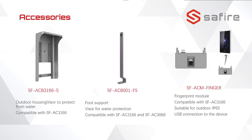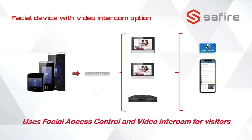We have some accessories — the housing, a power supply to connect the device, and an additional fingerprint reader for the AC3166. Some of the outdoor units can be used together with SAFIR monitors and even a recorder. Via the monitor you can also connect to the SAFIR Connect app on your mobile device so that you can answer the call or open the door.